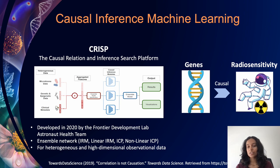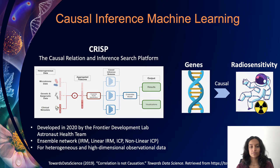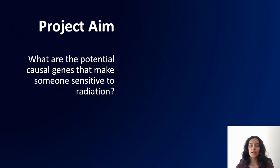The project leveraged a causal inference machine learning algorithm called CRISP. This algorithm, developed by the Frontier Development Lab astronaut health team, is a method used to explore causal features in high-dimensional omics data. The project aim was to investigate the potential causal genes that make someone sensitive to radiation.